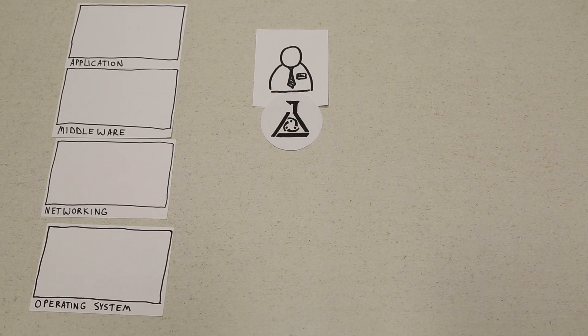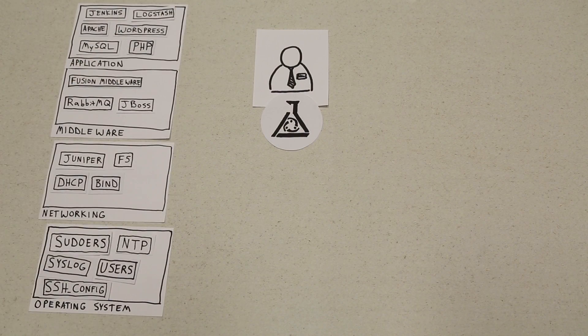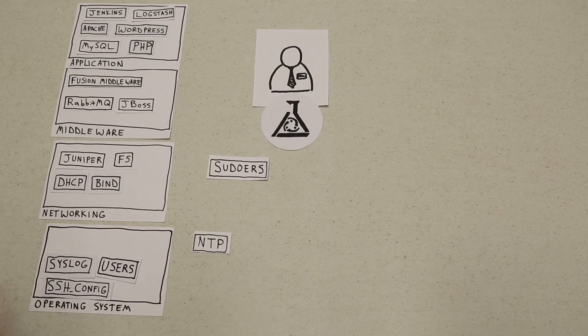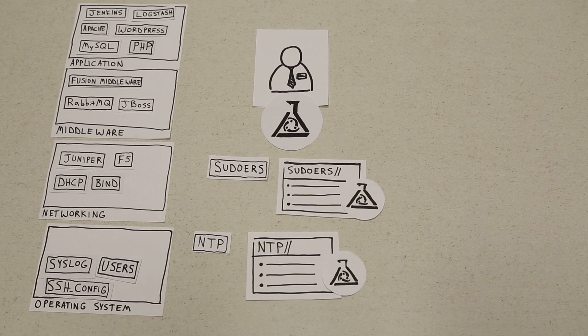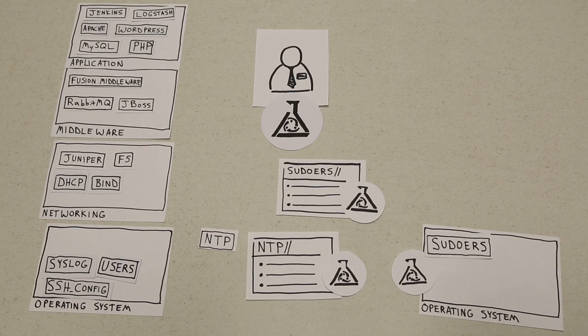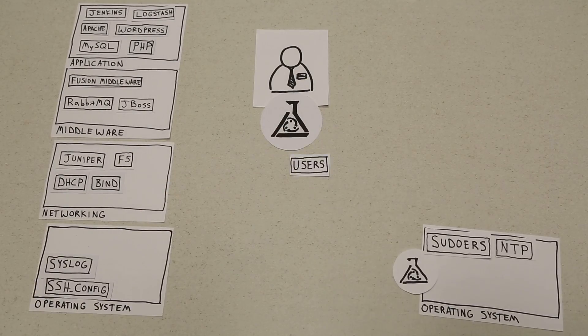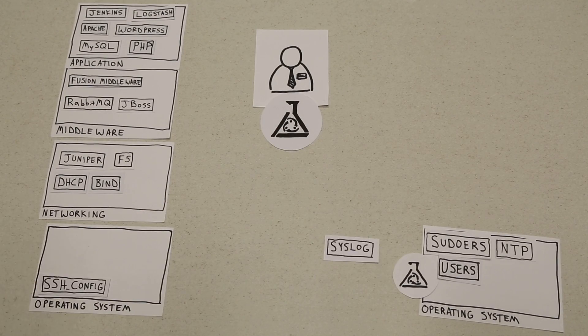Puppet Enterprise is an iterative solution that allows Joe to automate an individual pain point, like managing sudo users or NTP configuration. He can see instant results to prove the value, and he can expand his automation footprint to other parts of his infrastructure.